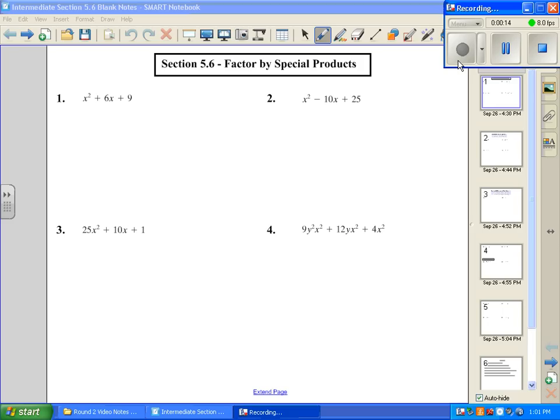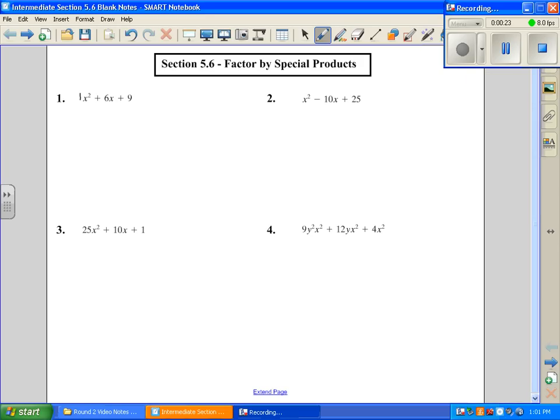But the first thing we always do is check for a GCF. So in number 1, none of these terms have a common factor. So then I see it's a trinomial. I'm going to try rooftop, which is what multiplies to give us 9, but add to give us our middle term, which is 6.